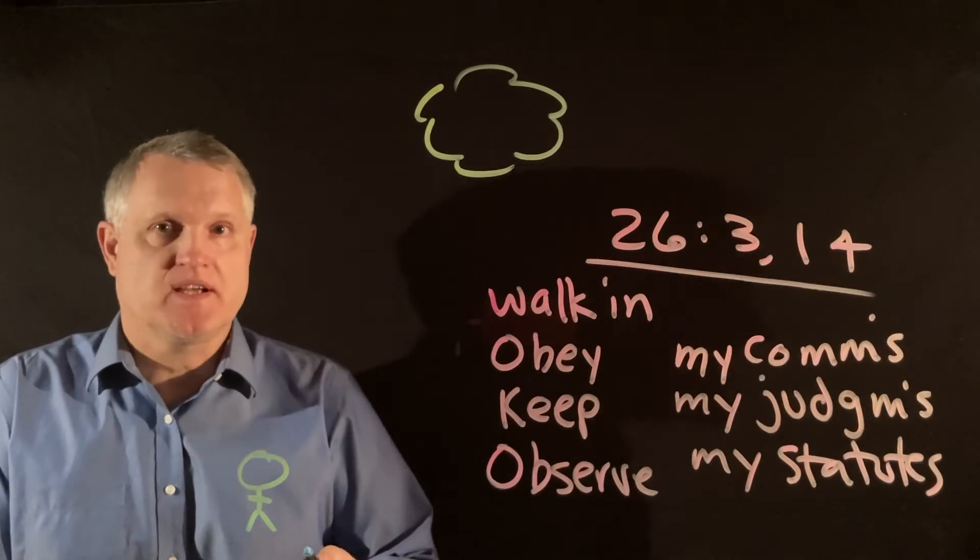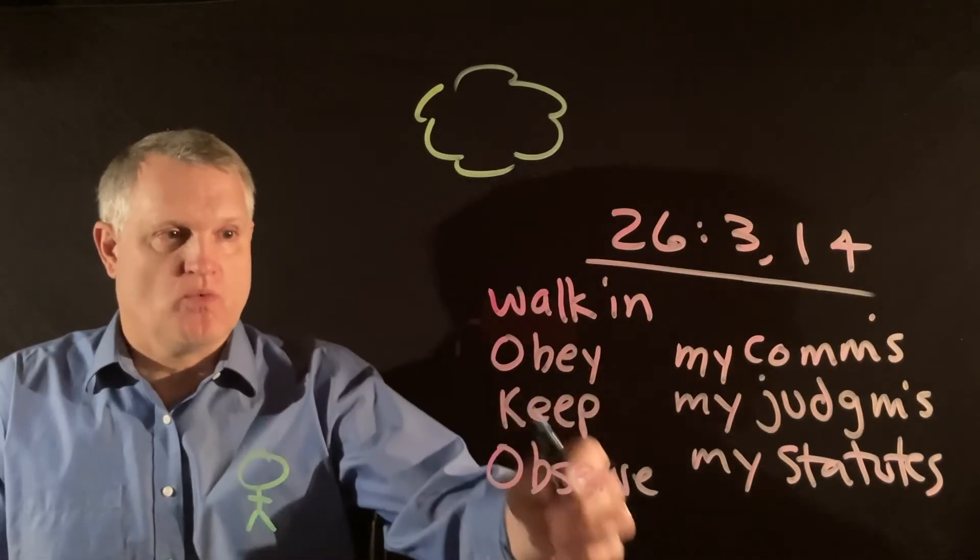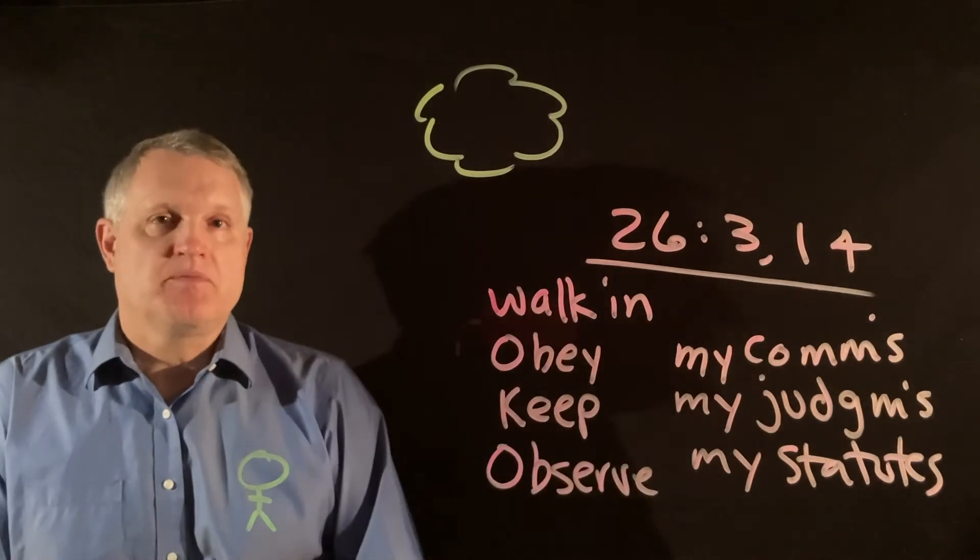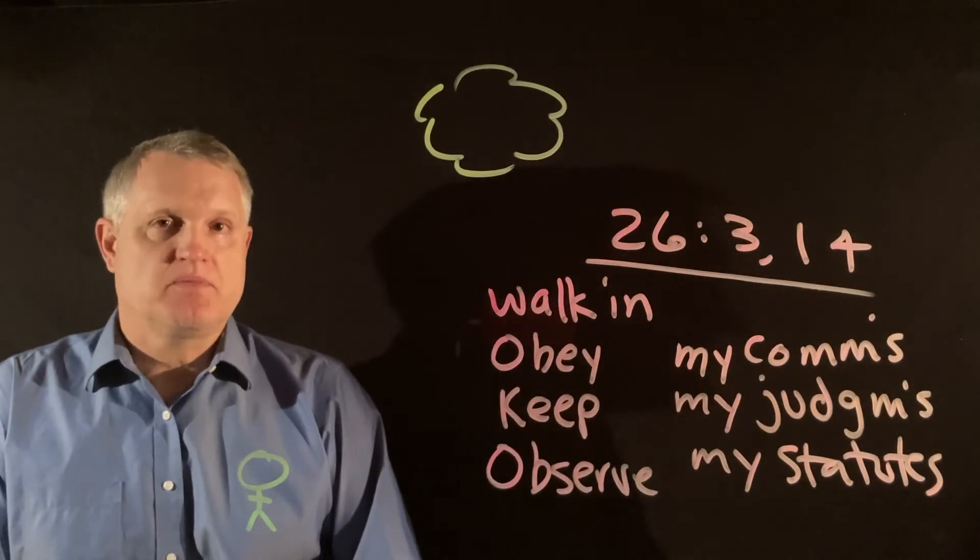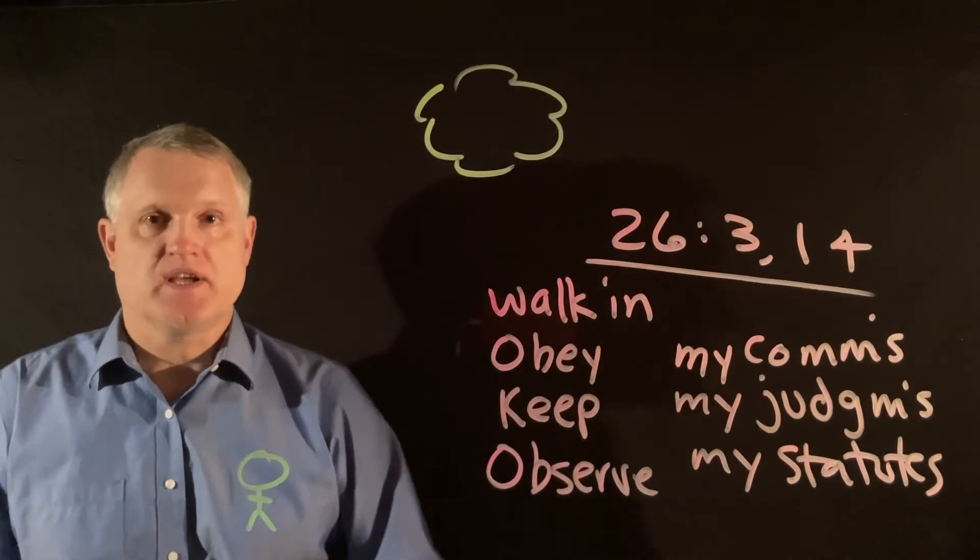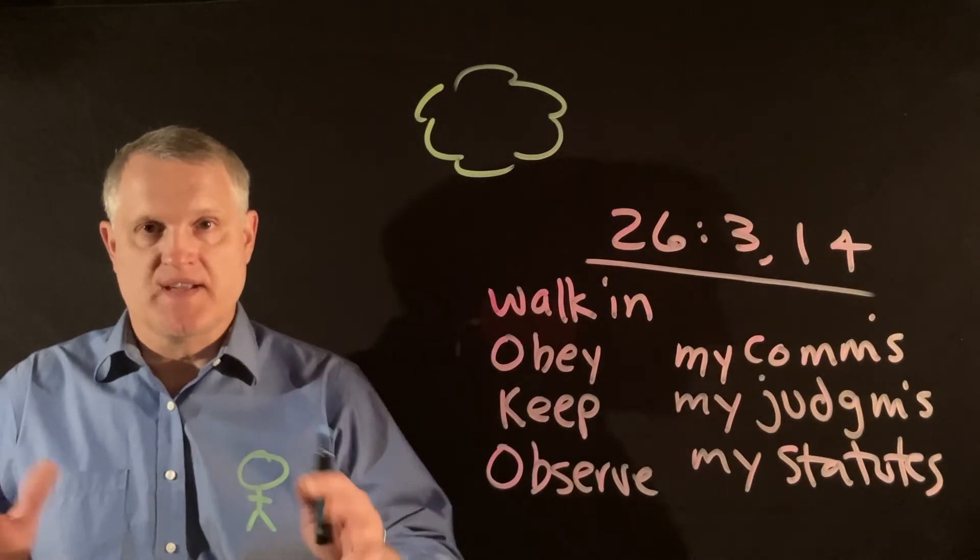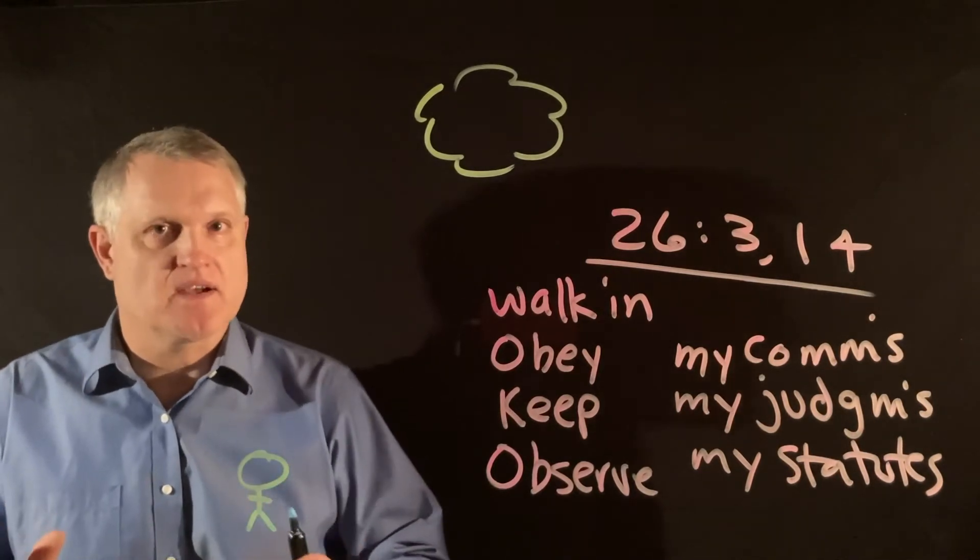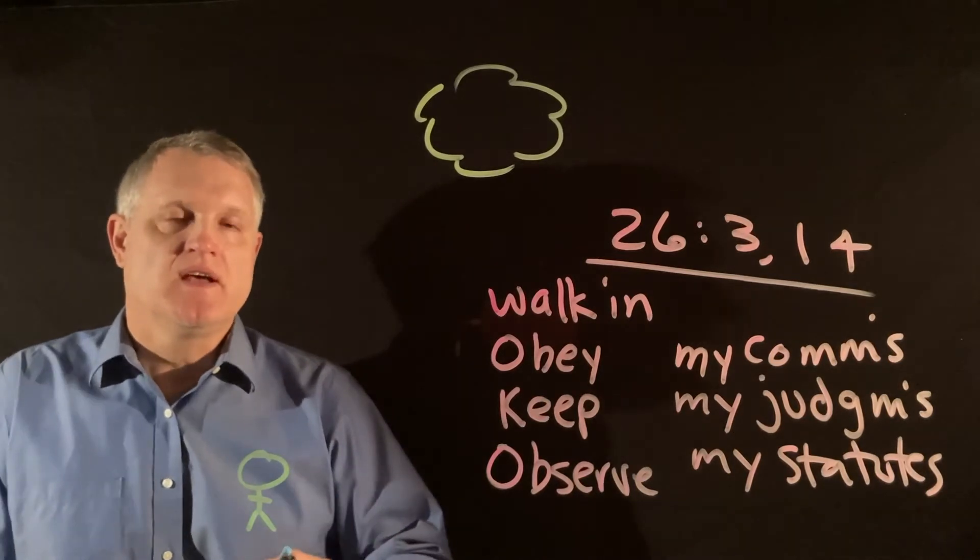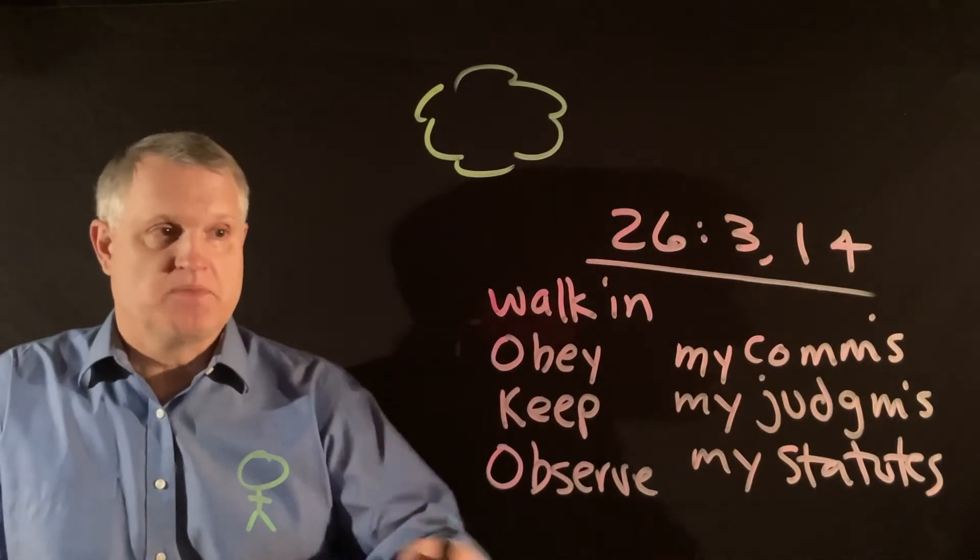Everything that God says after he says walk, obey, keep my commandments, he presumes they can do it. And so it would be a very cruel parent who would say to their child 'do this' and then stands back and knows they can't. It seems from everything the text is giving us that God expected his people to do these things.